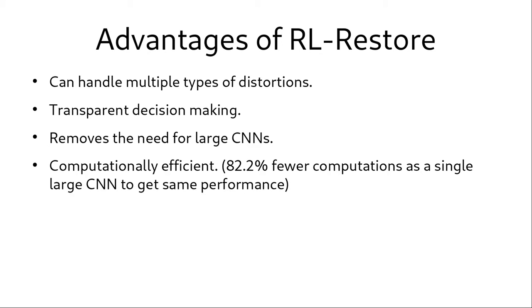The advantages of this algorithm is that it can handle multiple types of distortions like the deep CNNs and the decision making is transparent because we know which tools are being used. Using the decision making agent that is trained using reinforcement learning removes the need of using large CNNs and it is also computationally very efficient compared to these large CNNs. We can see that it takes 82.2% fewer computations as a single large CNN to get the same performance.